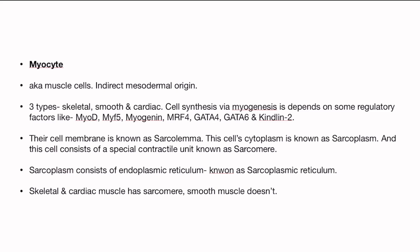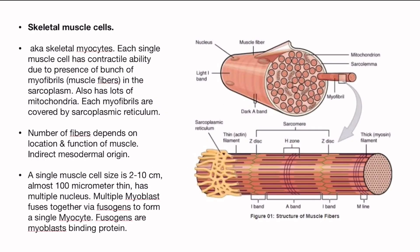Hello and welcome. Myocytes, the muscle cells, are actually three kinds: skeletal muscles, smooth muscle, and cardiac muscles. Today's topic is skeletal muscle cells.